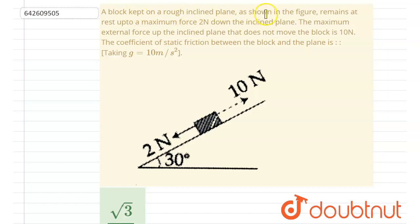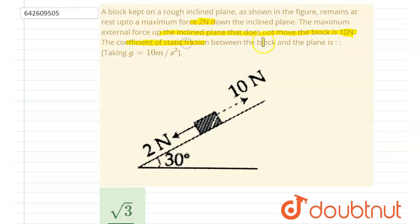Hello everyone. A block kept on a rough inclined plane, as shown in the figure, remains at rest up to a maximum force of 2 newton down the inclined plane. The maximum external force up the incline that doesn't move the block is 10 newton. The coefficient of static friction between the block and the plane is what?